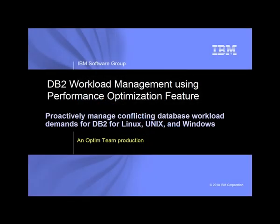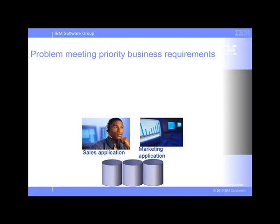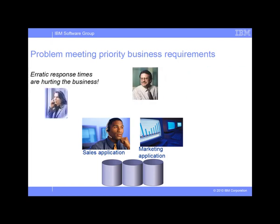Today we'll learn how one organization uses the DB2 performance optimization feature to maximize system resources to achieve business objectives. The Great Outdoors company Data Warehouse provides business-critical support for both marketing and sales. Unfortunately, the customer relationship management queries used to support sales activities in the call center have slowed down and become unpredictable ever since the marketing team started using software to run complex analysis of market trends.